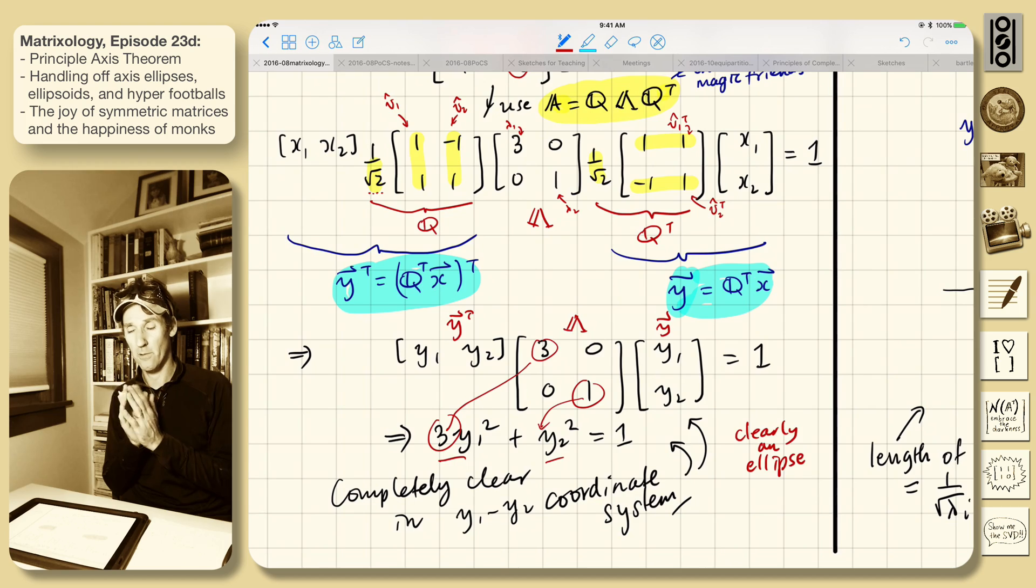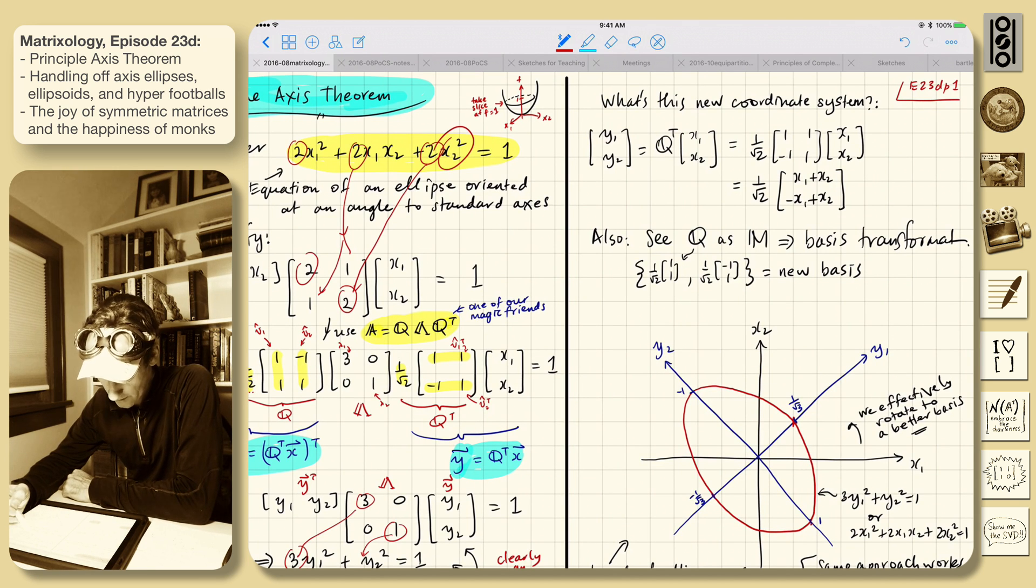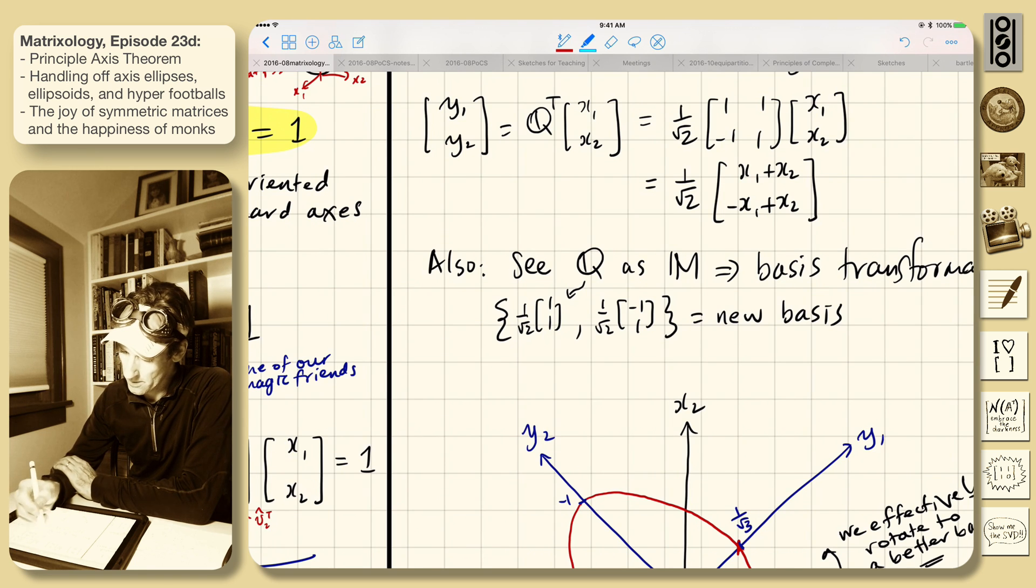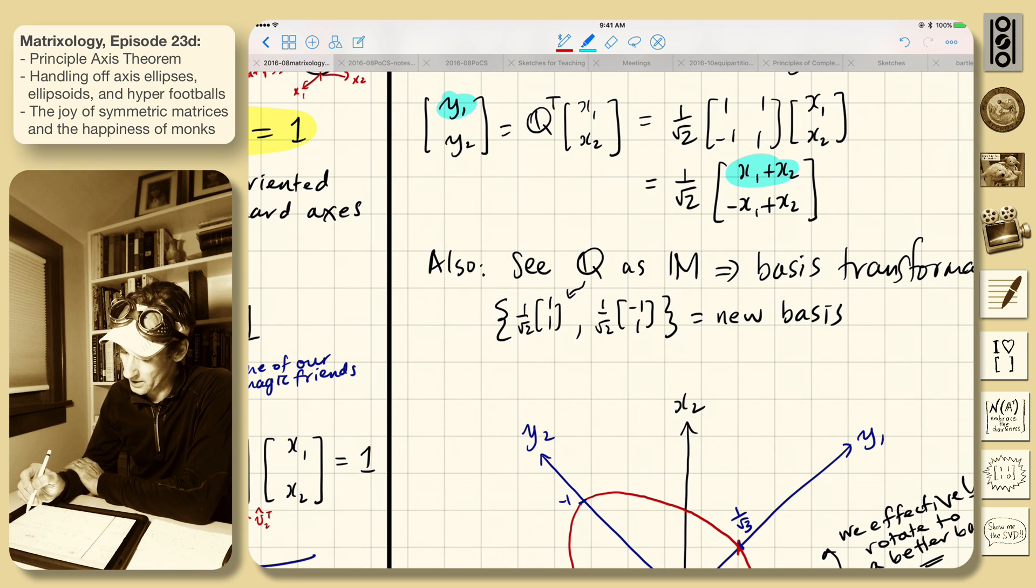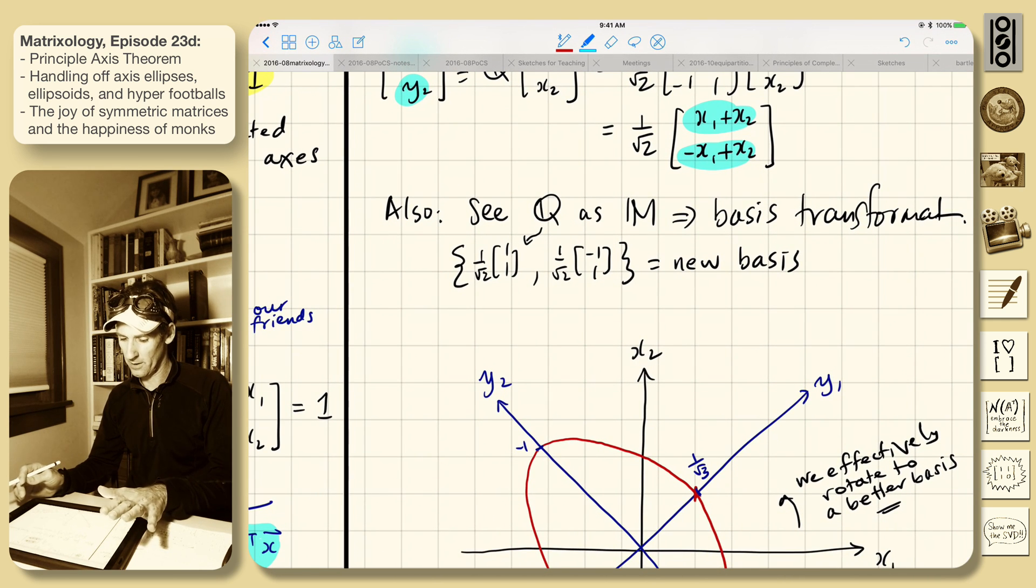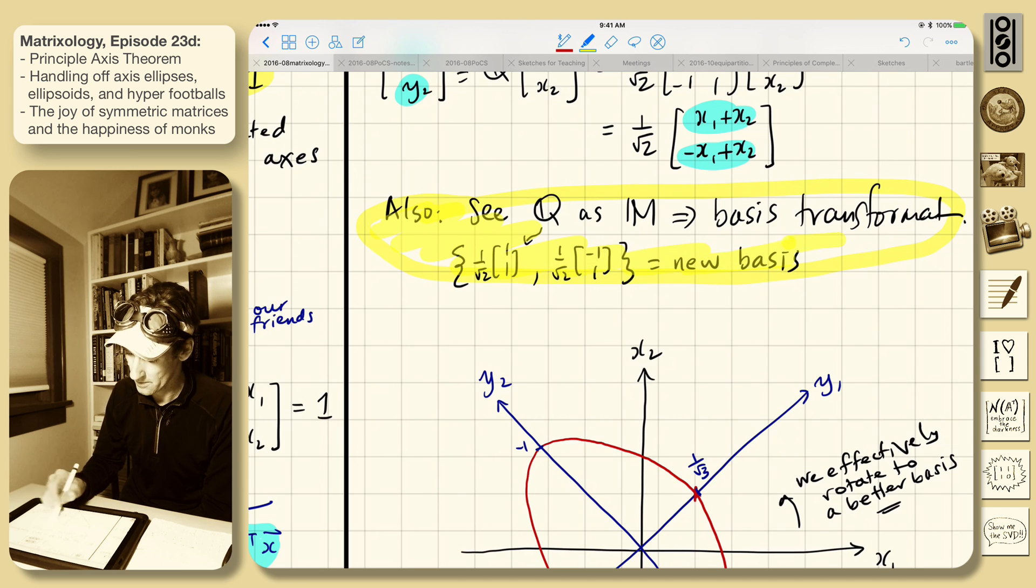But the y-axis, y1 and y2, they've been moved around. So we need to understand where they are. So what's this new coordinate system? We just wrote it down. It's y1, y2 is Q transpose x1, x2. So if we just multiply that out, we've got y1 is 1 over root 2 times x1 plus x2. y2 is minus x1 plus x2. So we could think of how this works. But more powerfully, we're going to see Q as this is the better thing. We see it is a basis transformation. It's exactly what's going on.